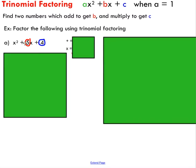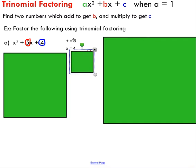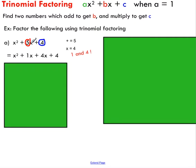You need to think: what are two numbers that add to get five while also multiplying to get four? I find it easiest to start with numbers that multiply to get the c value, then pick the ones that also add to get the b value. Numbers that multiply to get four — two and two comes to mind, but two plus two is not five, so that doesn't work. Let's consider one and four: one times four is four, and one plus four is five. So one and four are our magic numbers.